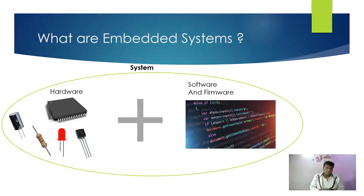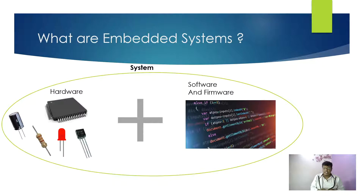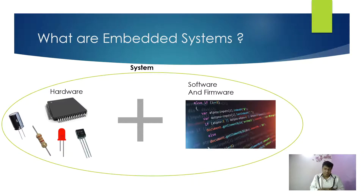Let's first see what are embedded systems. An embedded system is a combination of hardware and software designed to perform specific real-time tasks. Hardware can be your PCB ports along with active and passive components such as capacitors, resistors, LEDs, and transistors. This hardware will be flashed with software — a set of statements and algorithms which instructs the hardware to perform specific real-time tasks. Together, you call it an embedded system.